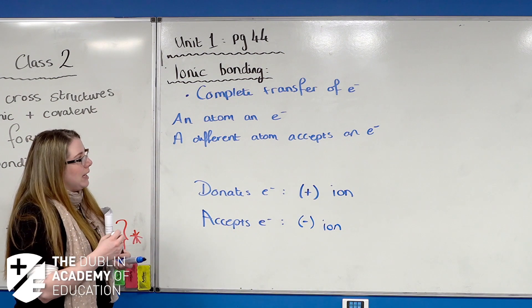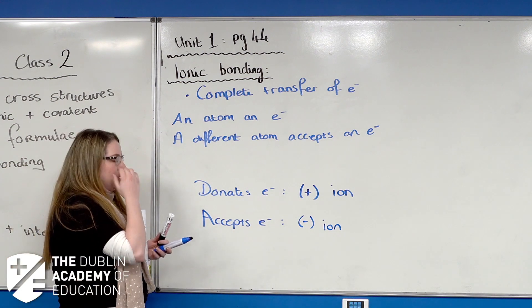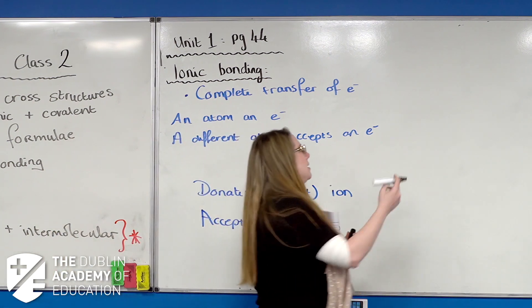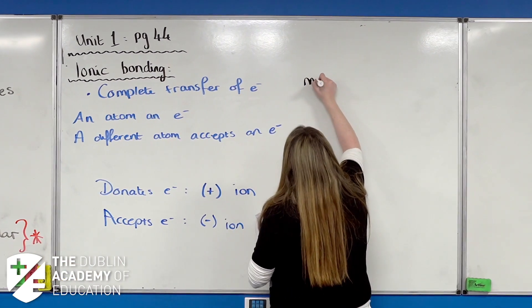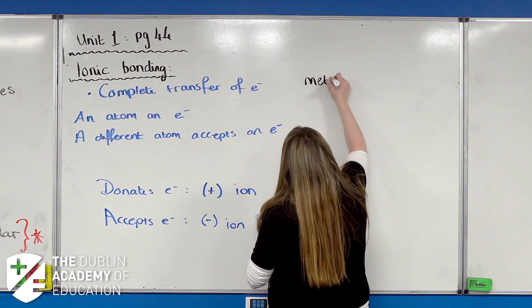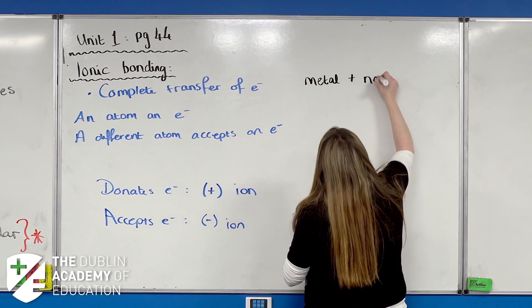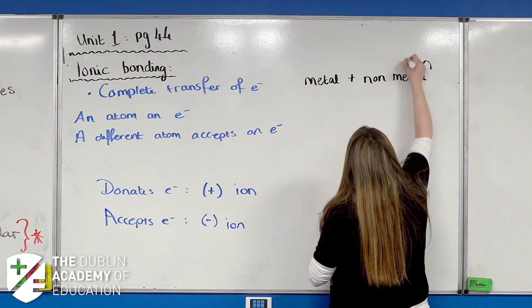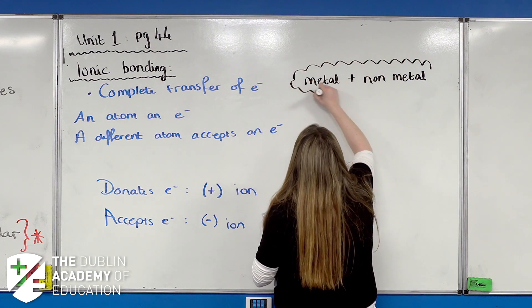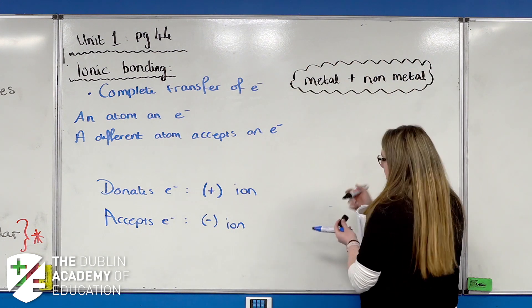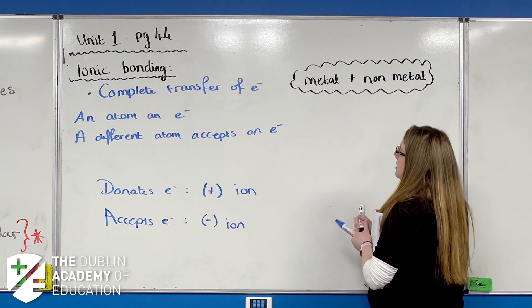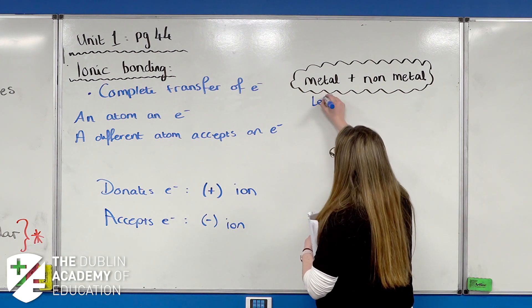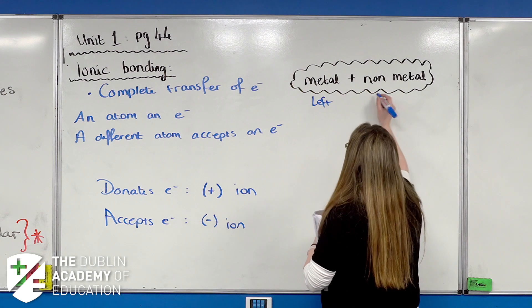The atom that accepts electrons is taking in a negative charge, so it becomes more negative and forms the negative ion. In ionic bonding, usually — not always, but the vast majority of the time — it forms between a metal and a non-metal. Looking at the periodic table, metals sit on the left-hand side and non-metals are on the right-hand side.